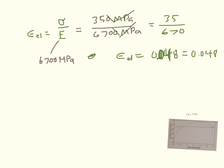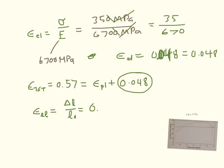And so the total, which is 0.57, equals the plastic plus the elastic 0.048. So we see that it recoils probably this much, and we know that the original length is factored into the strain. Delta L over the original length, so 0.048 is Delta L over 50 millimeters.